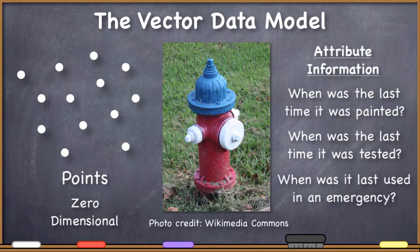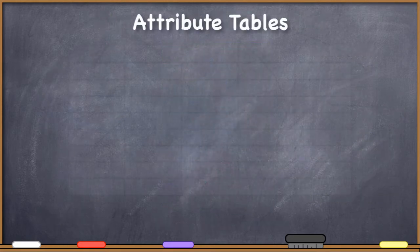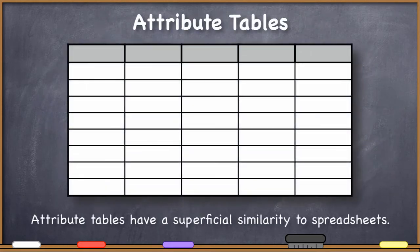This information would be stored in the attribute table. We want to study the construction of an attribute table here, because lots of times when people open up the attribute table, they just think of it as a spreadsheet, because in a general sense they look like spreadsheets with columns and rows.